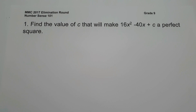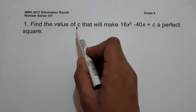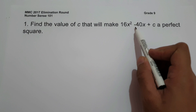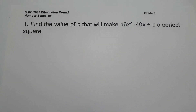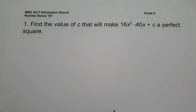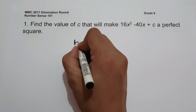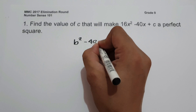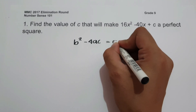For number 1, find the value of C that will make 16x squared minus 40x plus C a perfect square. To make this a perfect square, the discriminant should be equal to 0. The formula for the discriminant is B squared minus 4AC equals 0.